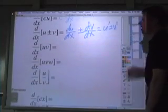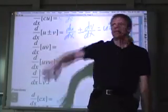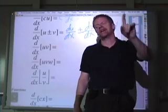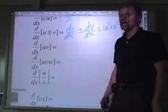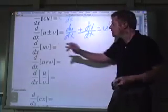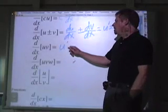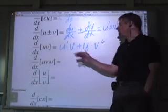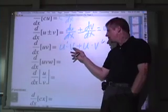Now let's take a look at the product rule. Raise your hand if you believe the derivative of a product is going to be the product of the derivatives. It turns out it's not that easy — the derivative of a product is not the product of the derivatives. The textbook has a proof based on the limit as h approaches zero of f(x+h) minus f(x) over h, based on the definition of the derivative. The derivative of a product is u prime times v plus u times v prime — that is, du/dx times v plus u times dv/dx.